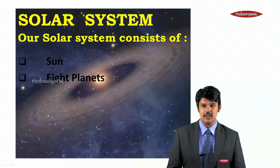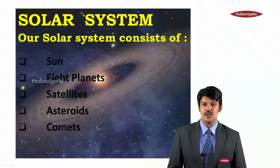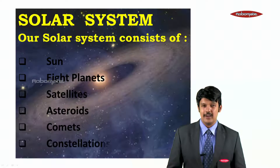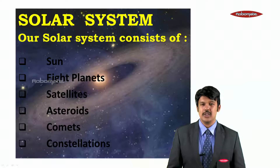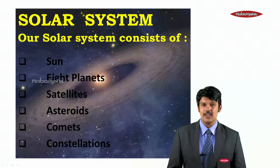It consists of the sun, eight planets, satellites, asteroids, comets, and don't forget constellations also. Now, let us understand in detail about the various components of our solar system.